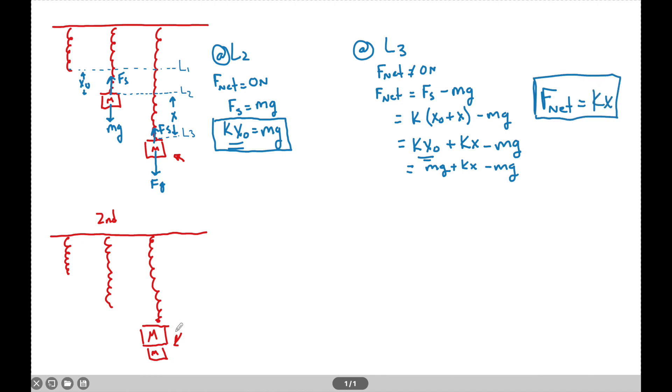And the reason in the second case it's exactly the same is because I can keep this exact same logic. The new L2 is now just going to be the same where Fnet is equal to zero Newtons and FS is equal to MG. The K will remain the same and I'll have an X0 still. That will be equal to M plus little m G.